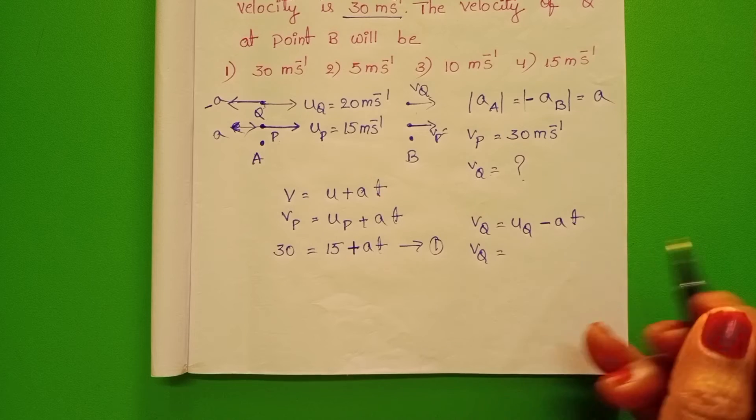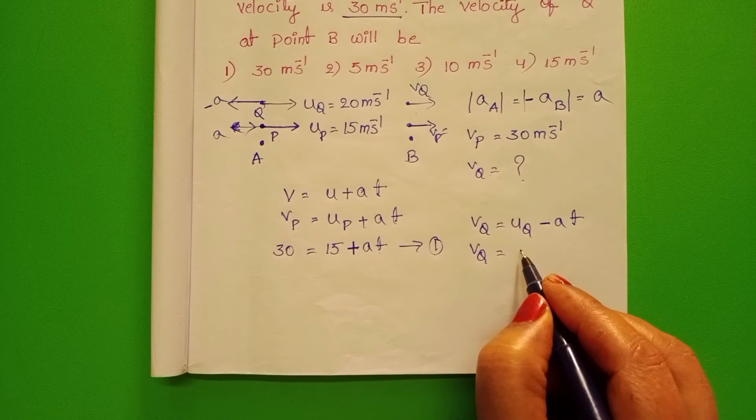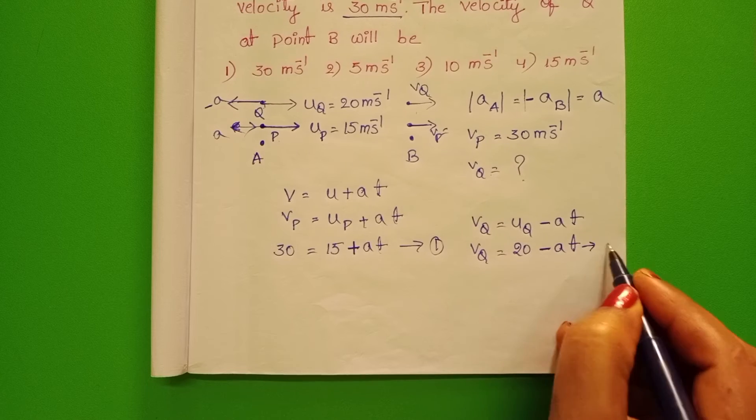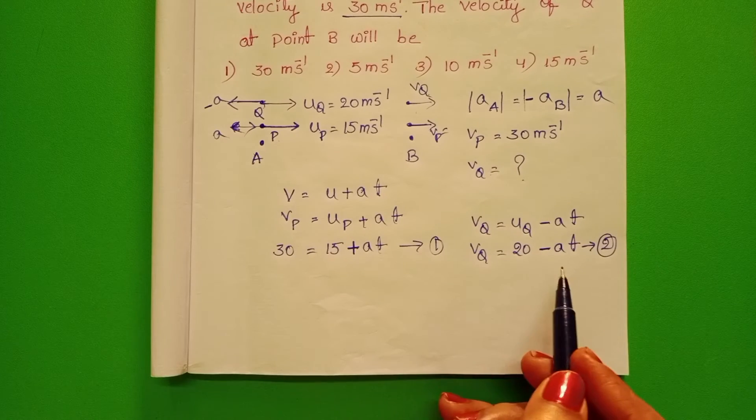Final velocity of Q is equals to initial velocity 20 acceleration minus A. For the simplification,